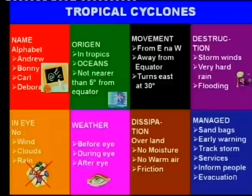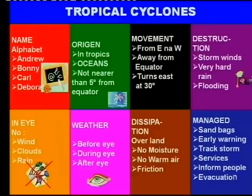Dissipation means the cyclone is dying over land because there is no moisture, no warm air, and friction. Think of moisture and warm air as the petrol for a tropical cyclone — as long as it moves over the sea it can refuel, but once it moves over land there is no petrol station to supply it anymore. Finally, how the cyclone can be managed is very important. This mind map covers eight topics that are usually examined when it comes to tropical cyclones.